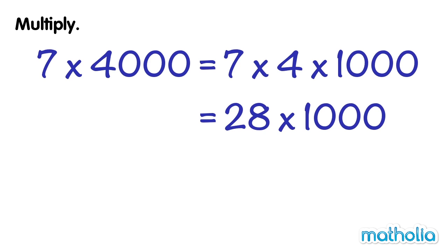28 times 1,000 equals 28 thousands, which equals 28,000. So 7 times 4,000 equals 28,000.